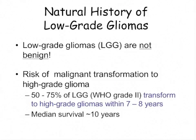Even though these are termed low-grade gliomas, a 10-year survival of 20% to 40% is certainly not benign, particularly if you're looking at a 40-something-year-old person. The natural history of this disease suggests there is a risk of malignant transformation from a low-grade glioma to a high-grade glioma, and the literature suggests that risk is about 50% to 70% in a period of seven to eight years. The median survival of all WHO grade 2 gliomas tends to be approximately 10 years, irrespective of treatment.